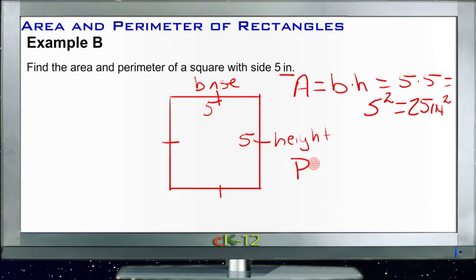And then the perimeter, again, with a square, all 4 sides are the same. So instead of doing 2B plus 2H, we're just going to do 4 times whatever one side is, 4S. And 4 times 5 is 20 inches.